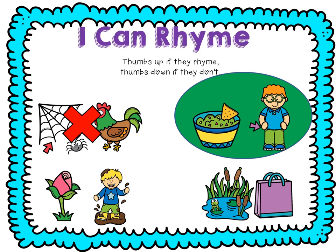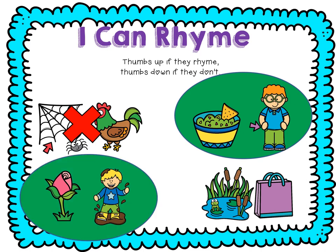Bud — mud. You say it: bud — mud. Thumbs up — they both have -ud. Last one: bog — bag. You say it: bog — bag. Thumbs down. One says -og and one says -ag.